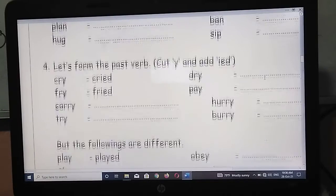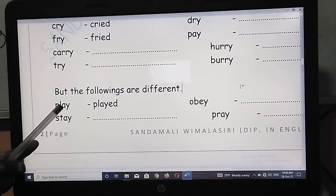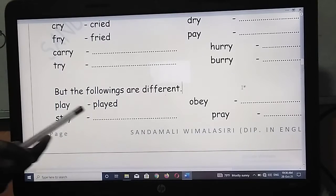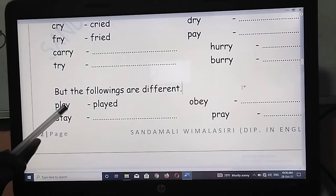But look here. When there is a vowel before Y, just add ED like we did in the first method. But there should be a vowel before Y.